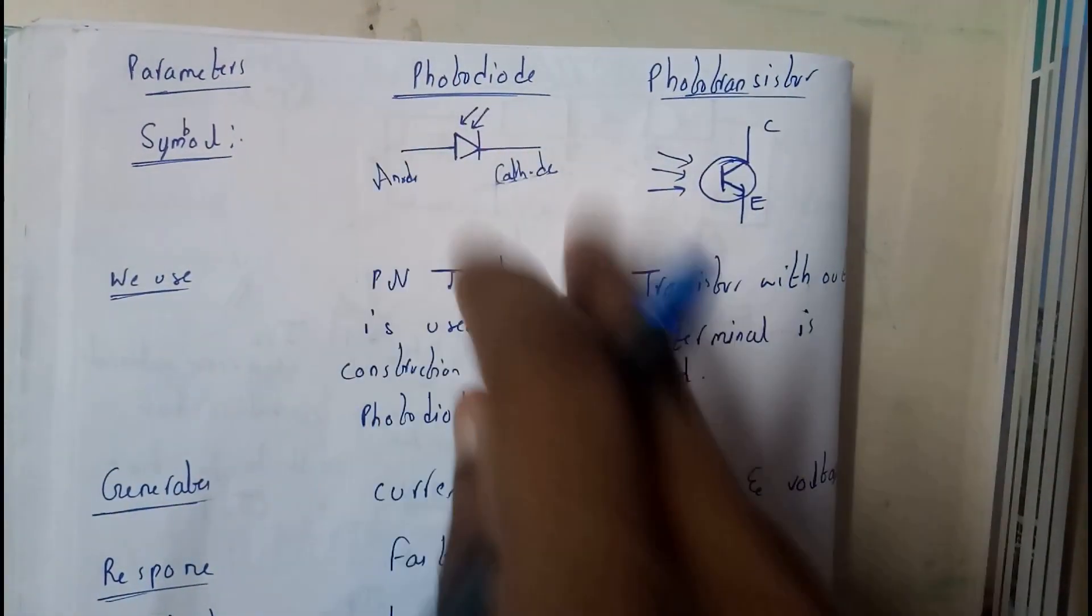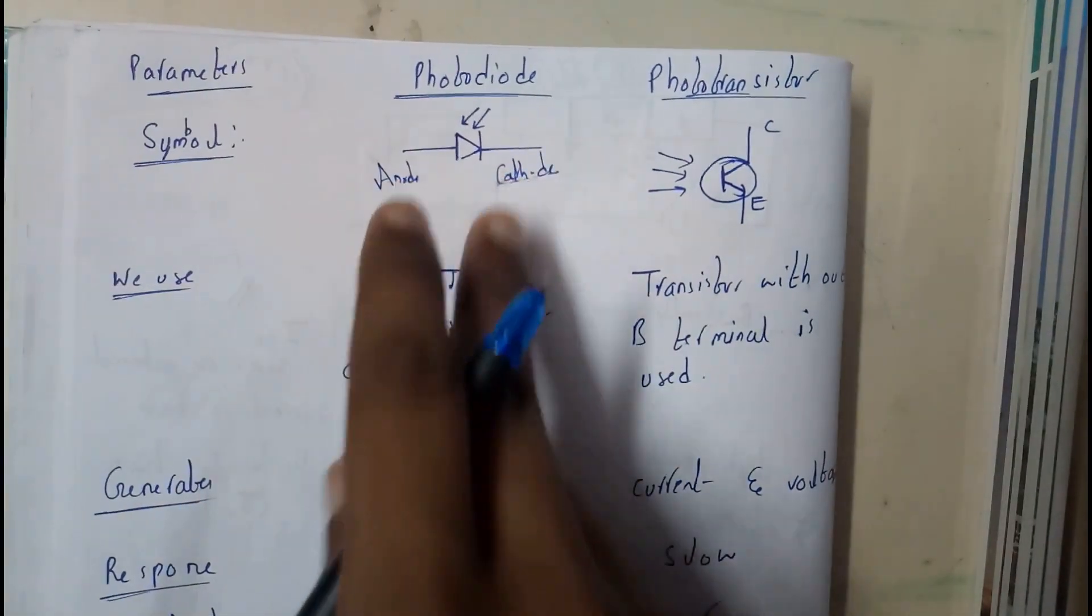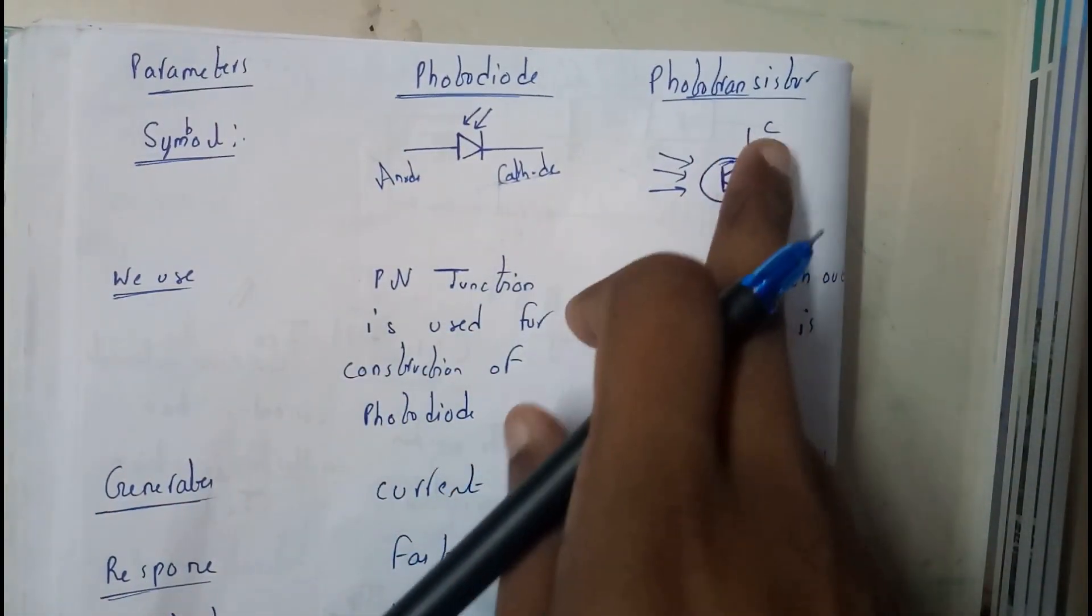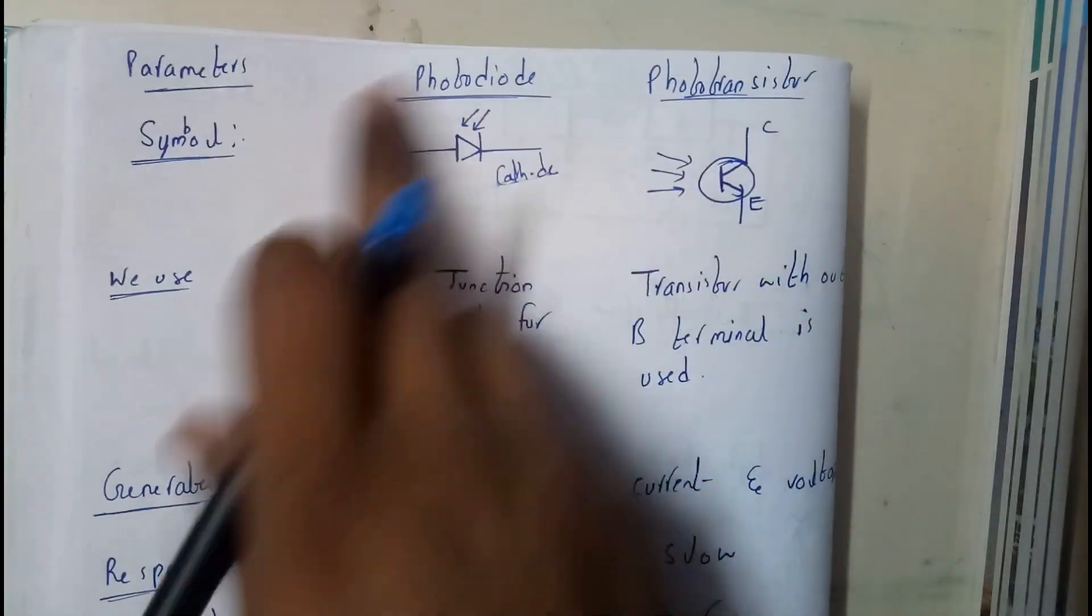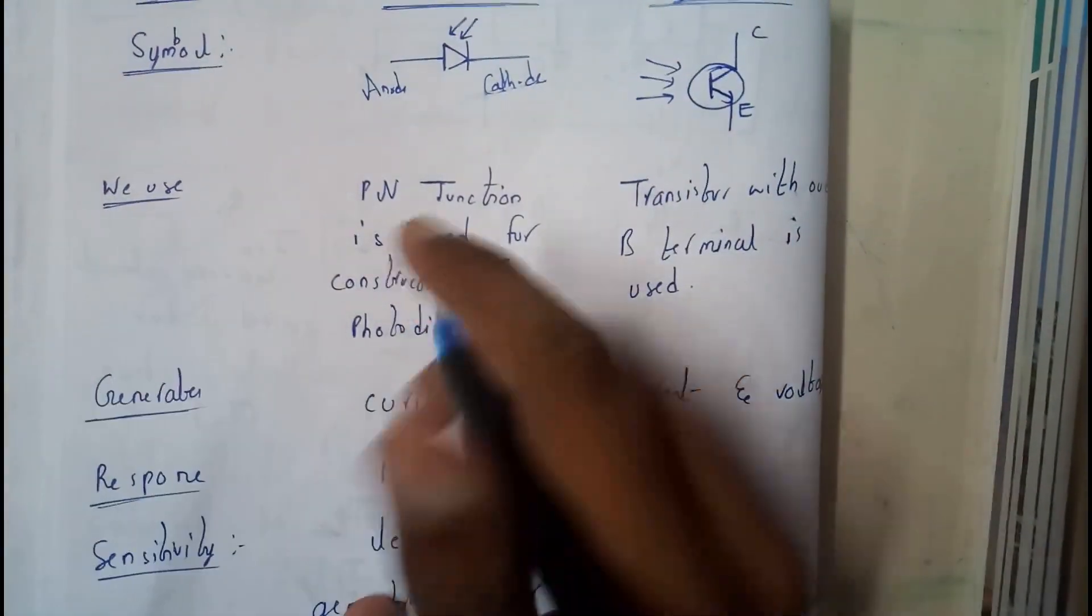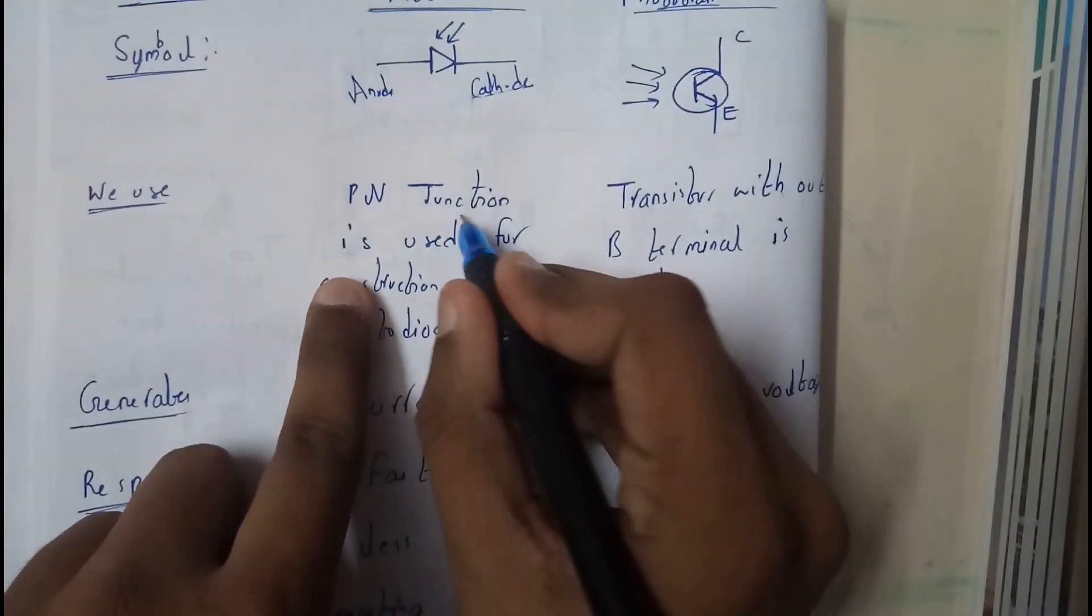Photodiode will be having two terminals - anode and cathode. Phototransistor will also be having two - that is collector and emitter with these symbols. We use a PN junction, right?